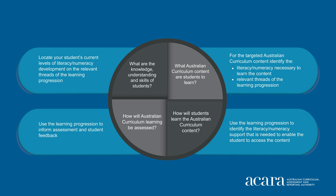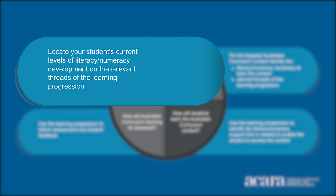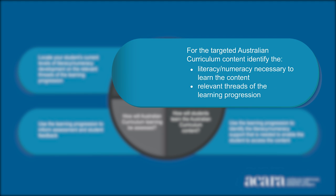Looking at the top left box, the progressions can help you locate the current literacy or numeracy development of each of your students, and what literacy or numeracy learning should follow. At the top right, when you're thinking about what content you want students to learn, think about the literacy or numeracy skills required to learn that content.